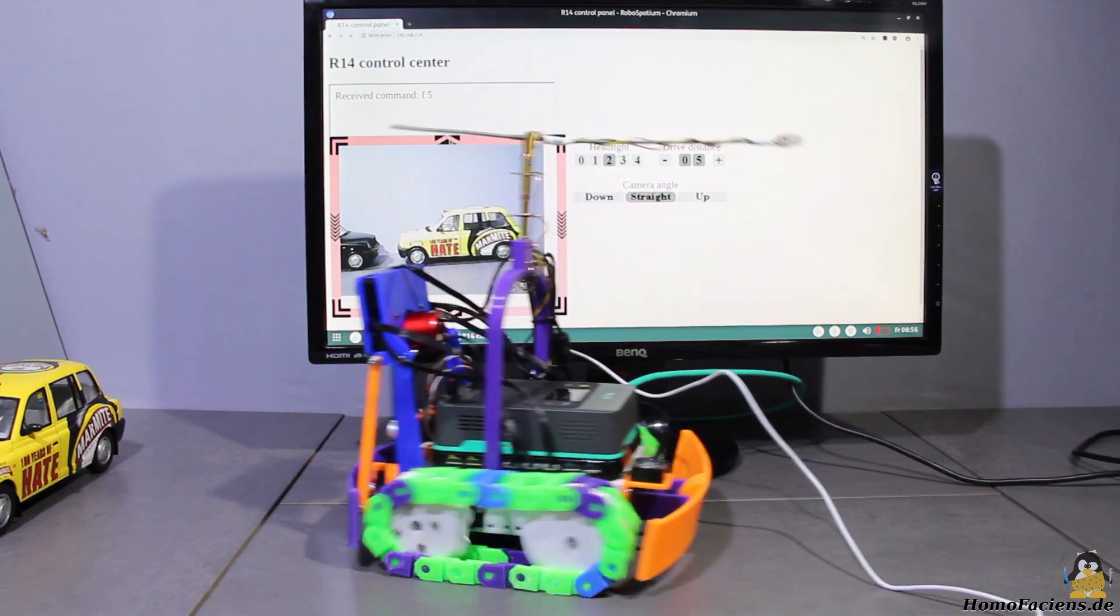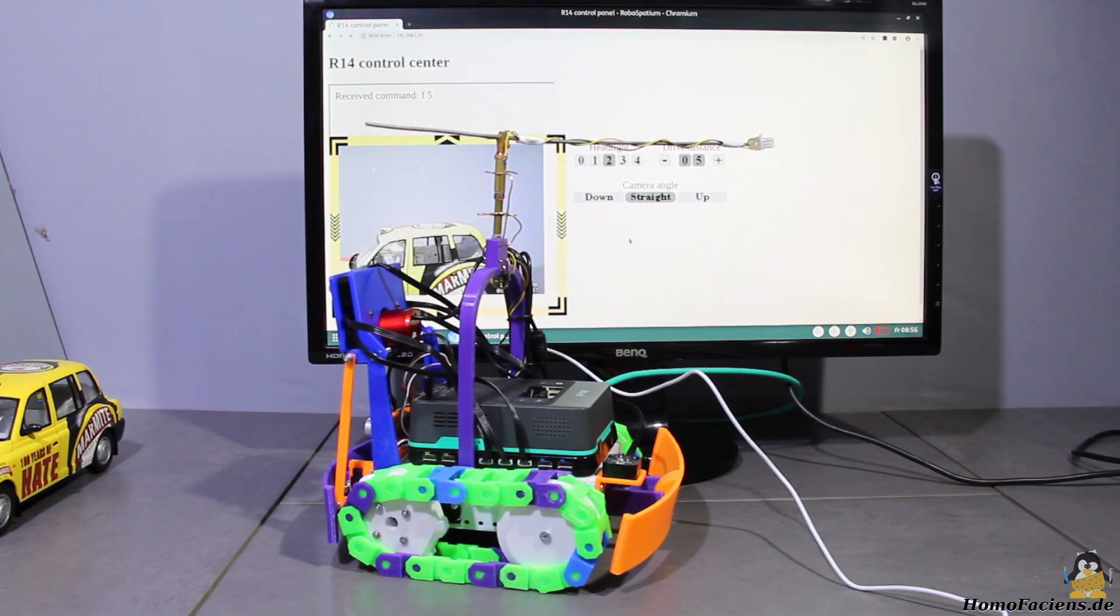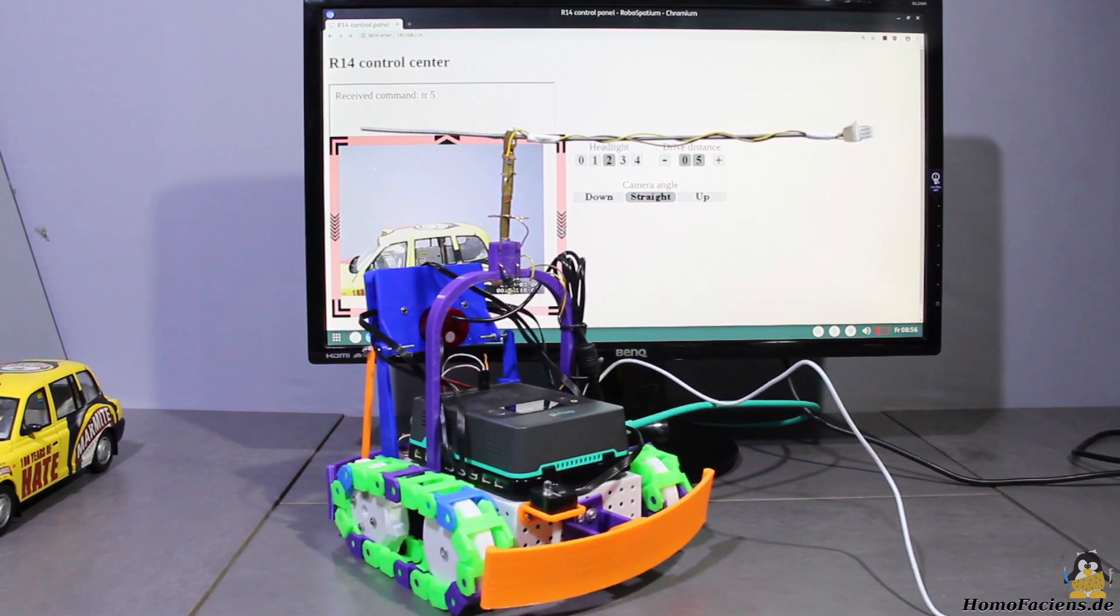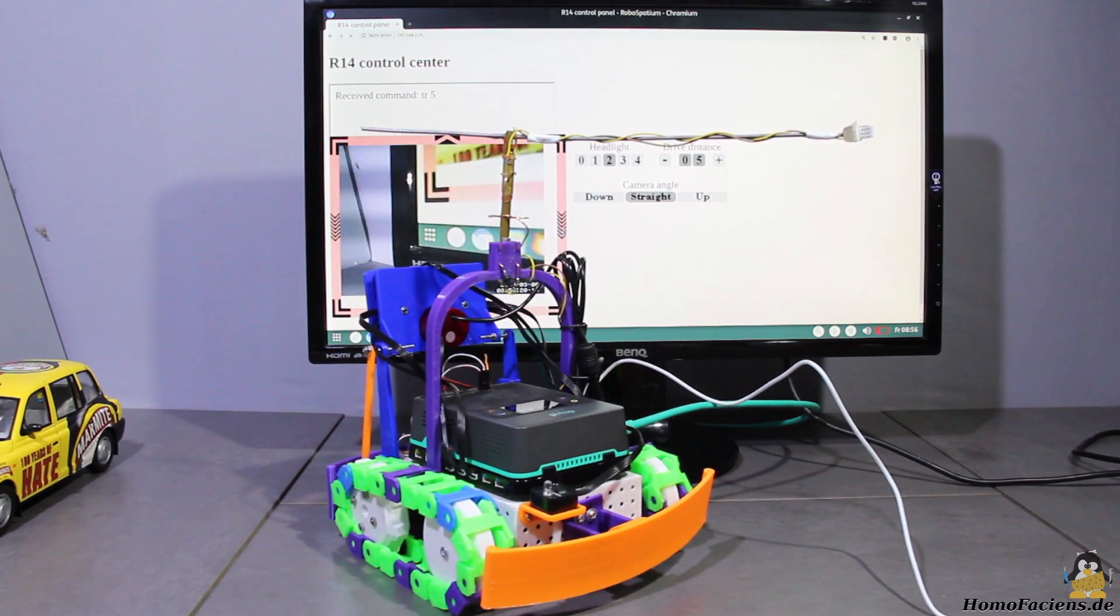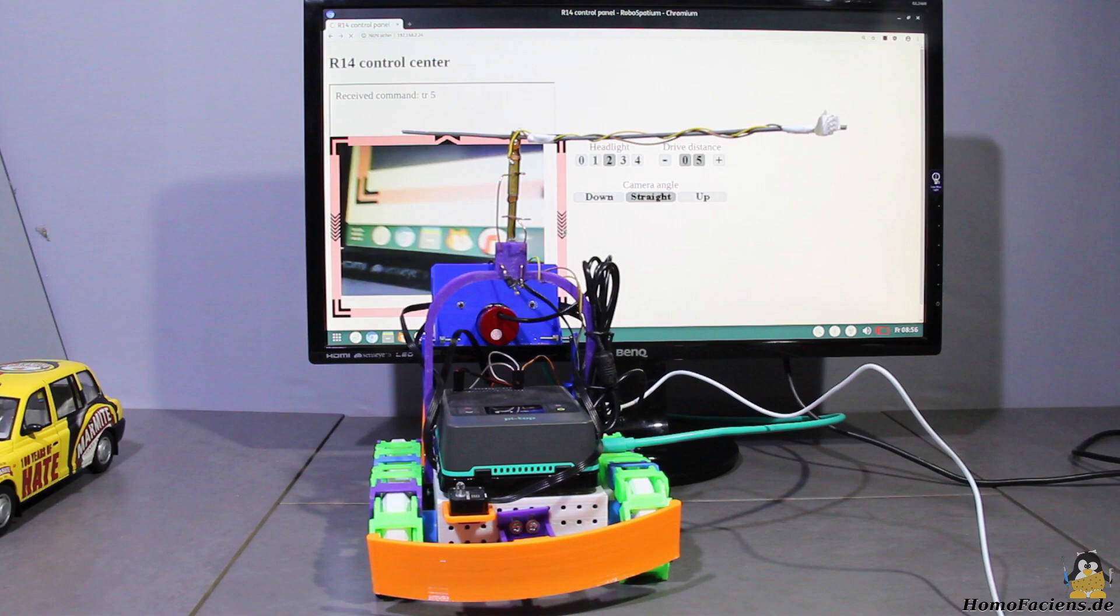Even after upgrading the Pi-Top 4 with wheels and camera, it can still function as a desktop computer if needed. Here I control R14 with the help of itself. It's a really mobile computer.